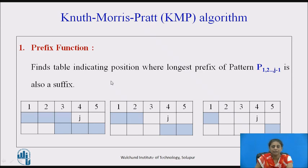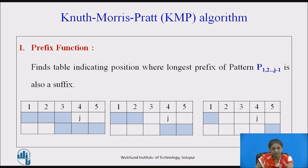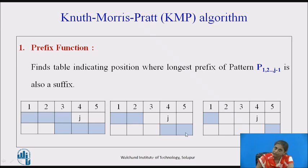In KMP we first find how many characters match as both a prefix and a suffix. At position J, characters 1, 2, 3 form the prefix and characters at positions 3, 4, 5 form the suffix. We need to find the longest substring from position 1 to J−1 that is the same as both a prefix and a suffix. If three characters don't match, try two; if two don't match, try one — this gives us the prefix value.